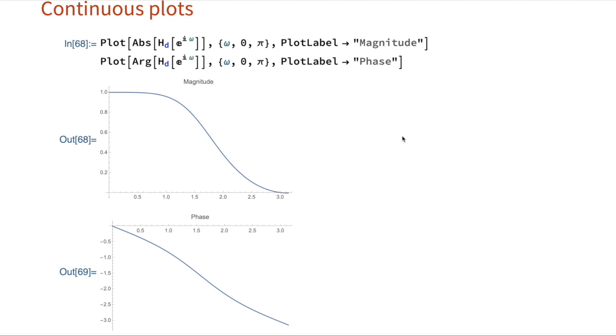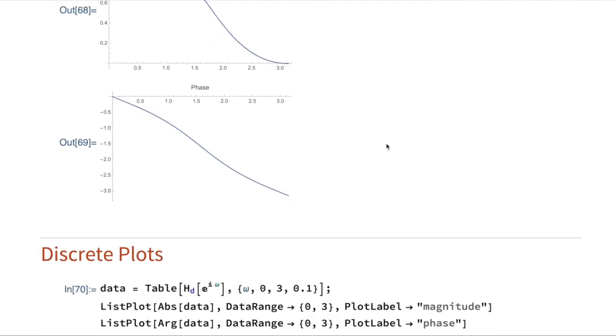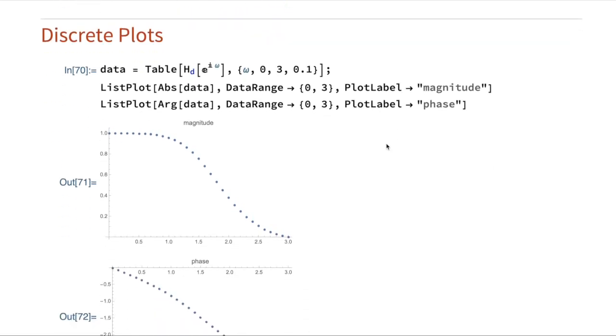So that is the way that I do magnitude and phase plot in Mathematica. Now, many of you will not have continuous plotting functions, so you'll need to do it in a discrete format. Here's an example of doing it discretely in Mathematica. So table just creates an array, a list of values. I'm allowing the frequency omega to vary between zero and three in increments of 0.1.